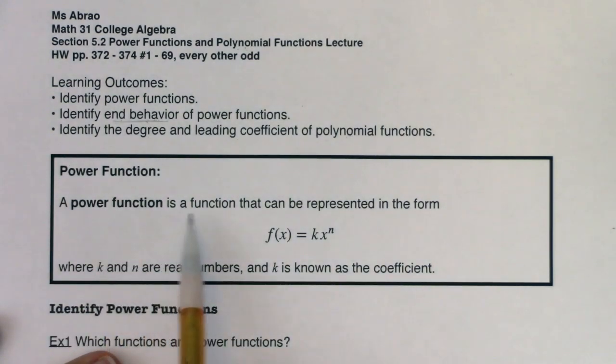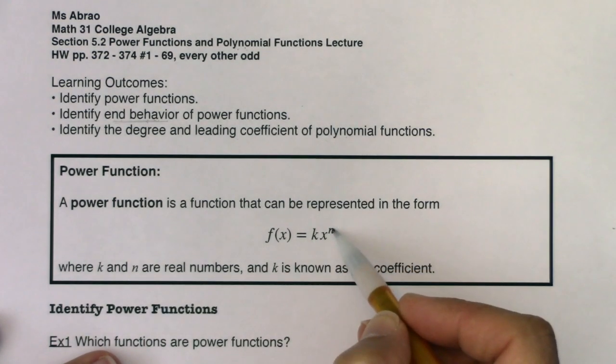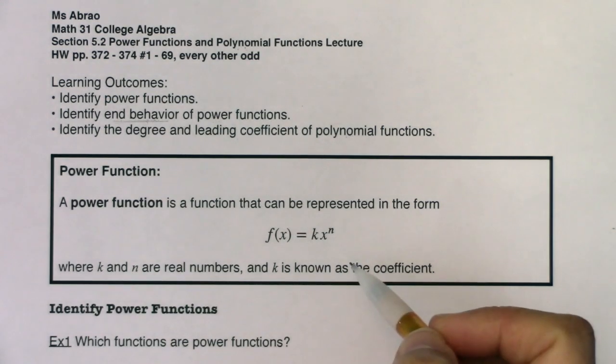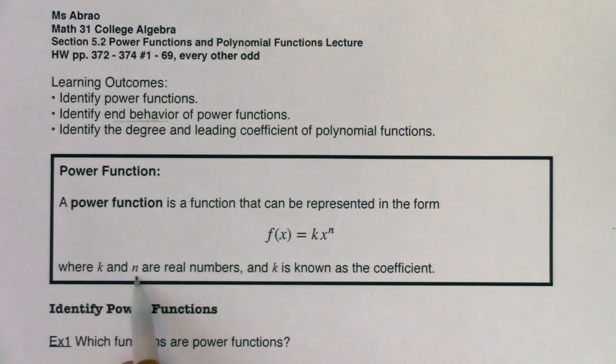A power function is a function that can be represented in the form f(x), your function, equals some coefficient, some number k, times x raised to a power, specifically x raised to a power of n. So we would call this a degree n power function, and k and n have to be real numbers.